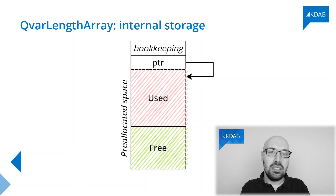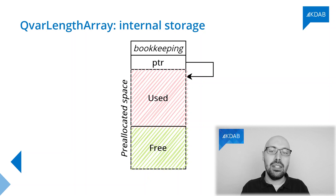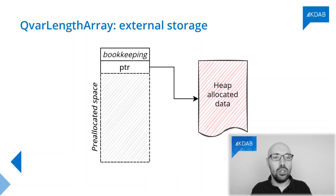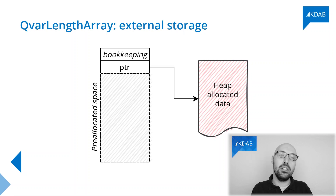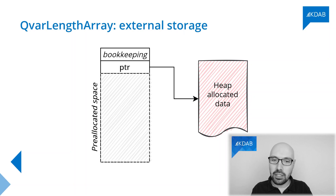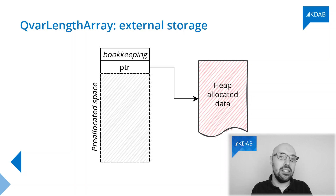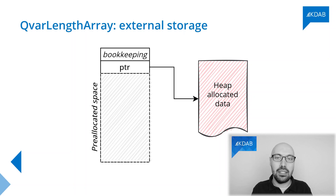But what happens if you fill it up? What happens if you need more than that? In that case, QVarLengthArray switches allocation strategy. It's simply going to allocate data on the heap, just like a plain standard vector or a plain QVector. In which case, that pre-allocated space is unused, because eventually you need more than that.